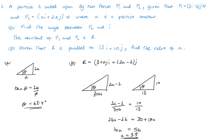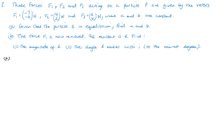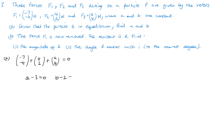For question three, part a — finding a and b given the forces are in equilibrium. We have minus 7 minus 4 plus 4, giving a minus 3 equals zero, so a equals 3. And minus 4 plus 2 gives b minus 2 equals zero, so b equals 2.